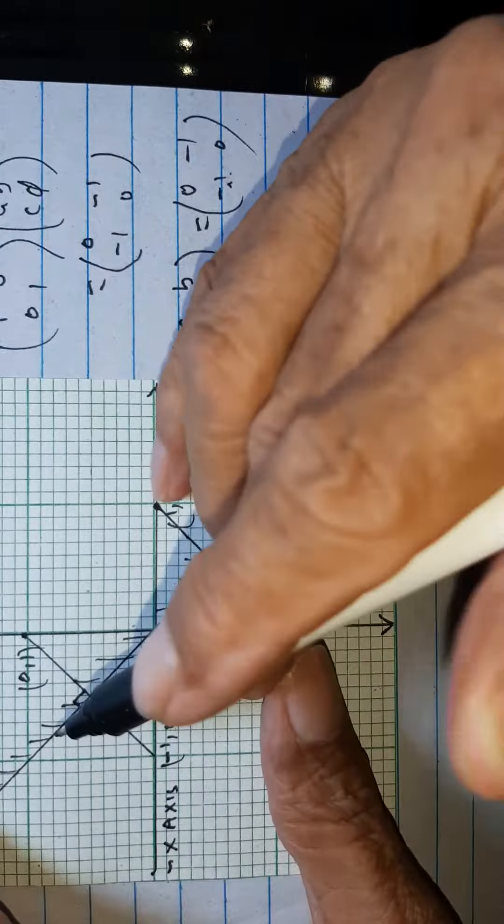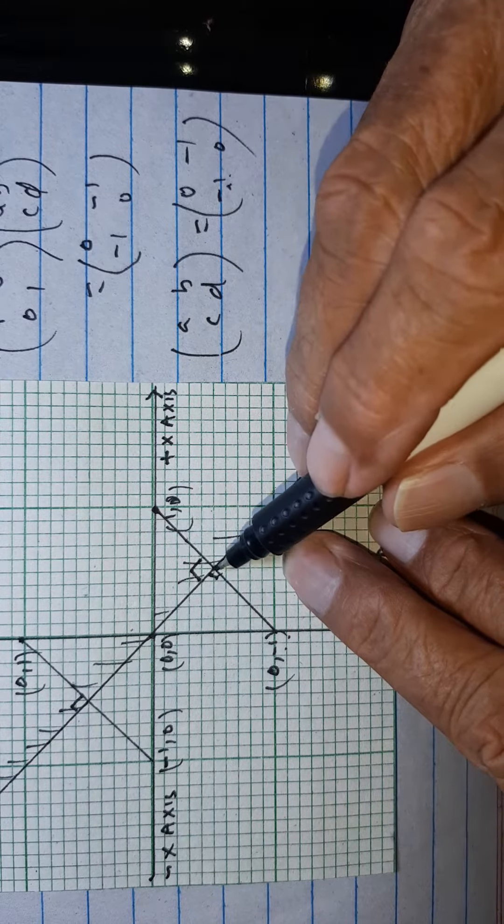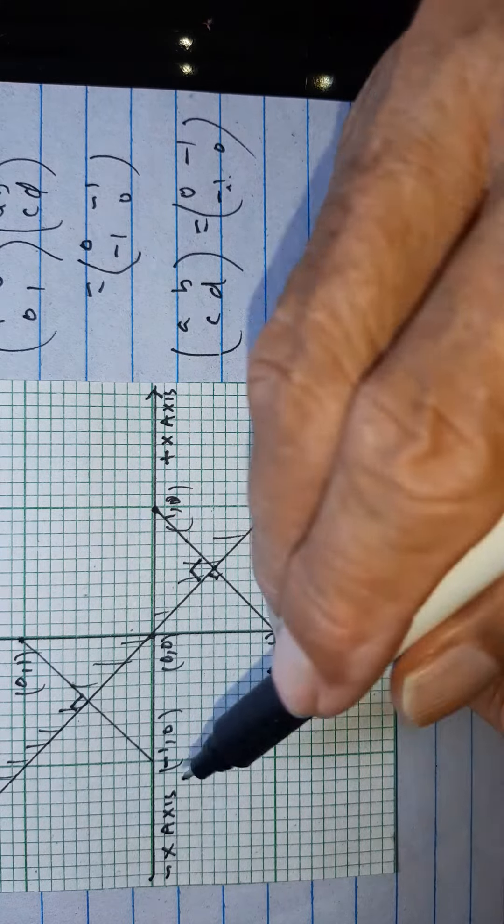If we have any line, we take the perpendicular distance from the point to the line and the same distance in the opposite direction. And this is the reflection.